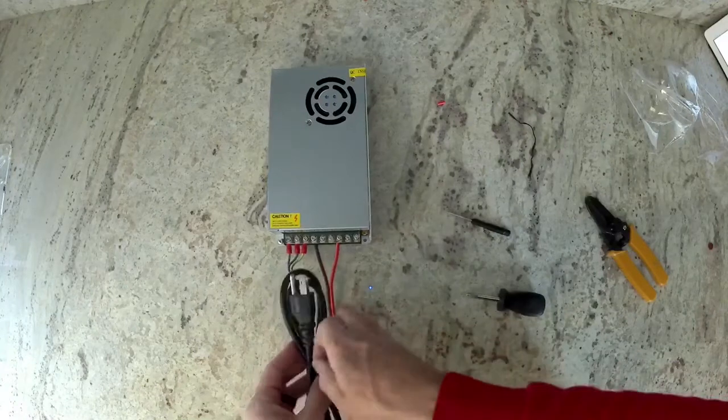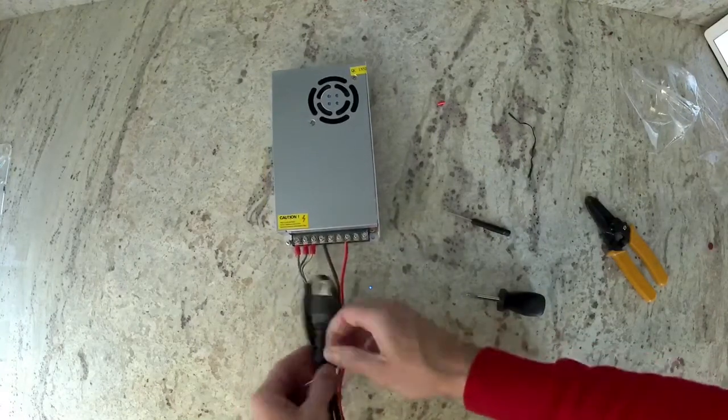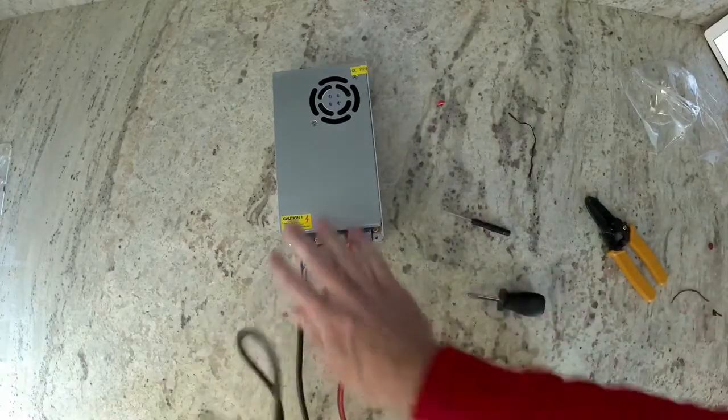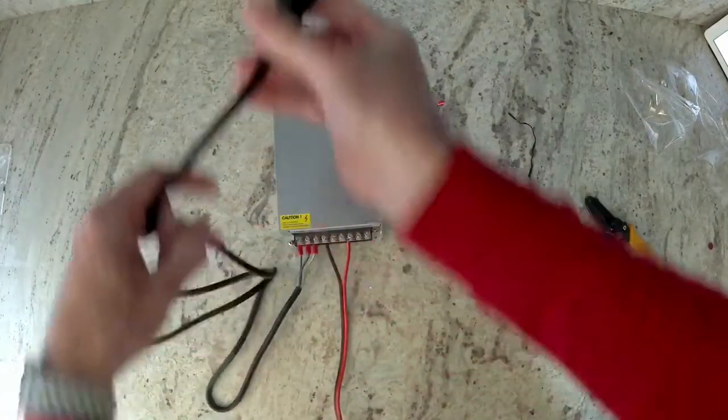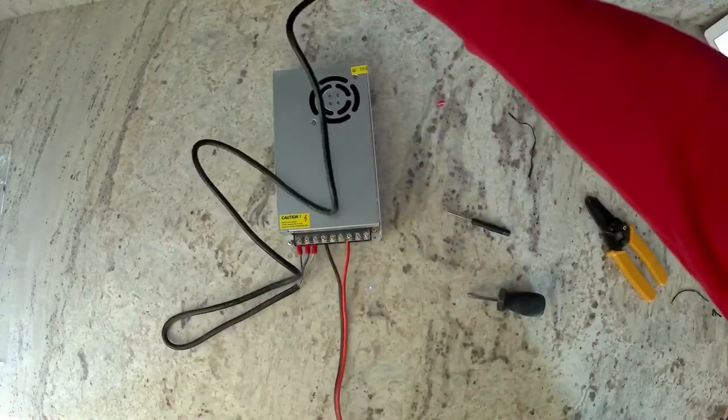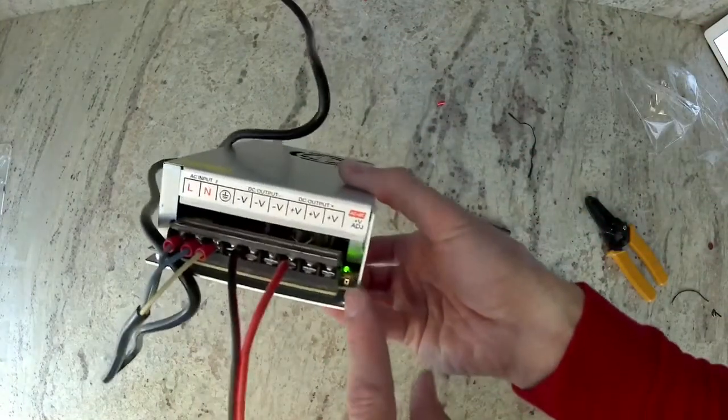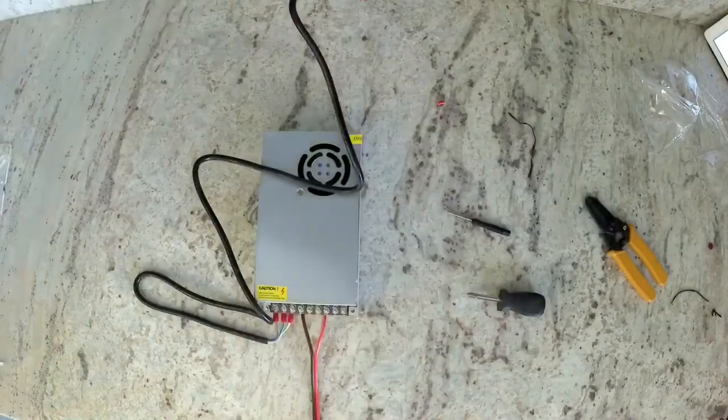Now we're going to test out our power supply. To do that, we're going to plug it into the wall. Make sure the other end of the red and black wires are not contacting each other, otherwise that will short it out. Go ahead and plug in your power cord now, and you're going to notice on the right side, there is a little green light showing that we have power.